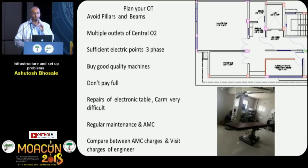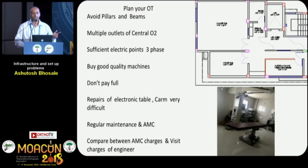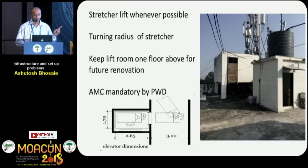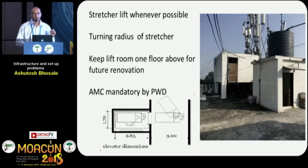You have to maintain machines regularly with regular maintenance and AMC charges. But before signing an AMC, compare the AMC charges against visit charges — most of the time visit charges are less than your annual AMC charges. So if you buy good quality newer machines, your AMC charges will be less. Whenever possible, think about a stretcher lift — the turning radius of the stretcher must be communicated to the architect. Keep the lift room one floor above for future expansion; if your FSI increases and the lift room is on your terrace, you can't use that space.